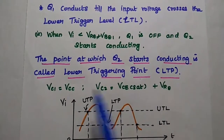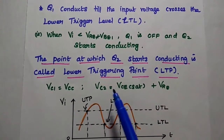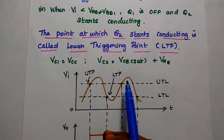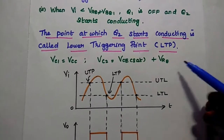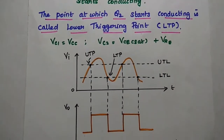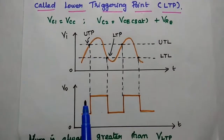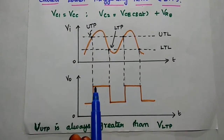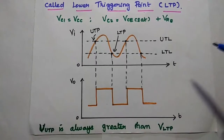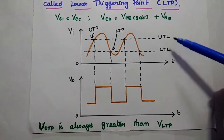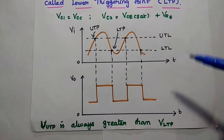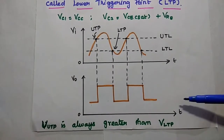At the lower trigger point, VC1 becomes VCC and VC2 equals VCE(sat) + VRE. This process happens continuously to produce the square wave signal. This is the input and output waveform of the Schmitt Trigger. In the waveform, the upper trigger level (UTL) and lower trigger level (LTL) are very important to obtain a perfect square waveform.